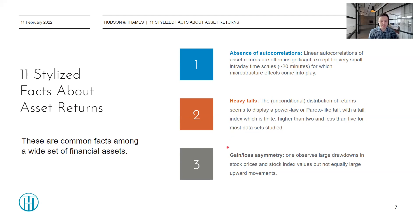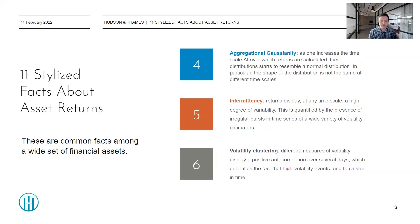Point three is gain/loss asymmetry: one observes larger drawdowns in stock prices and stock index values, but not equally large upward movements. Point four is aggregational Gaussianity: when one increases the timescale delta T over which returns are calculated, the distributions start to resemble a normal distribution. In particular, the shape of the distribution is not the same at different scales, which is important to keep in mind.